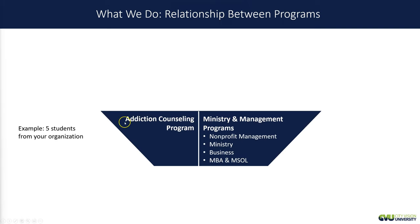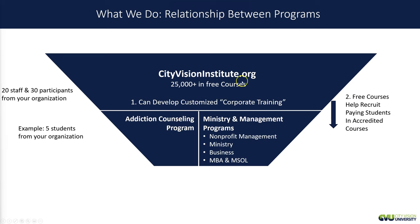A third way is explaining the relationship between our programs. We have the Addiction Counseling Program and the Ministry and Management Program. As we partner with an organization, we look to get many people from that organization's staff engaged. We might have five students taking our accredited courses, but then we have our City Vision Institute — with over 25,000 students in our free courses — where an organization may have 20 staff and 30 participants go through. We also provide customized corporate training for partners. The idea is that some students who take our free courses will like them and pay to get the accredited version. The free courses don't come with faculty, credit, or other students — it's like a free app where you pay for the upgrades: working with faculty, other students, and getting credit.